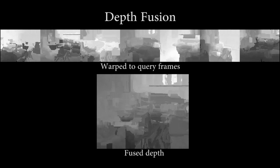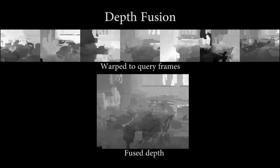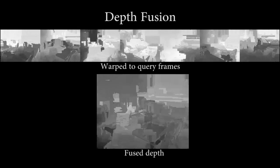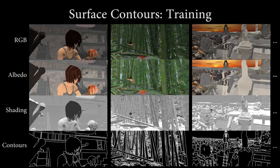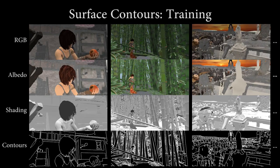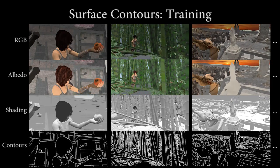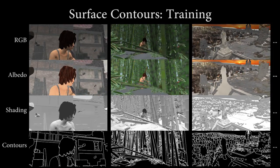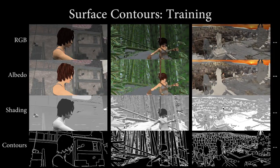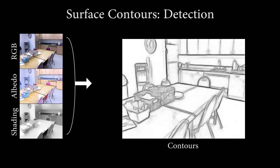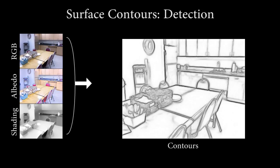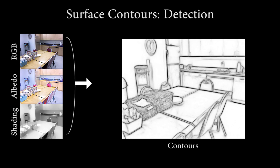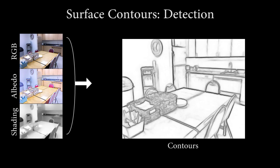Corresponding depth maps are then warped to the query video using SIFT flow. We use a new dataset with ground truth albedo, shading, and surface boundaries to train decision forests to detect edges. These edges are likely to correspond to surface boundaries.